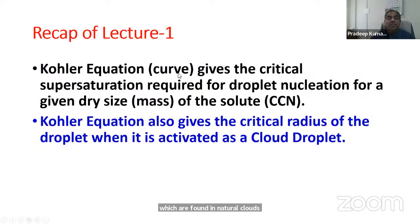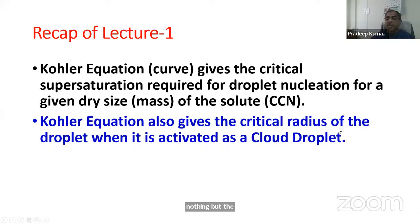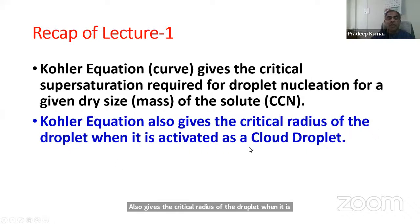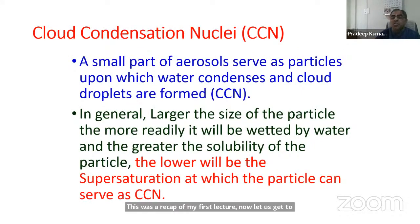The Kohler equation, or Kohler curve, gives the critical supersaturation required for droplet nucleation for a given dry size or given mass of solute. Solute is nothing but the CCN. The Kohler equation also gives the critical radius of the droplet when it is activated as a cloud droplet. That was the recap of my first lecture. Now let us get to the second part: cloud condensation nuclei.